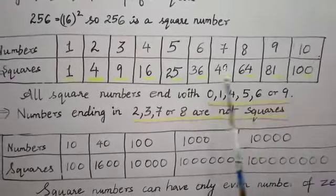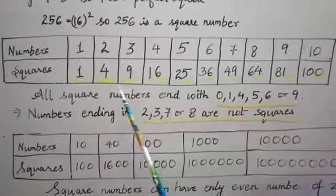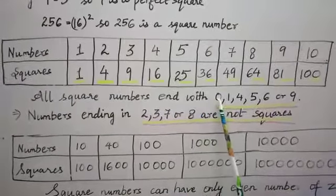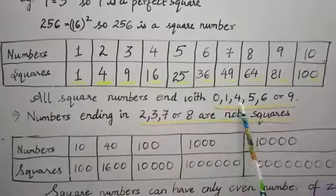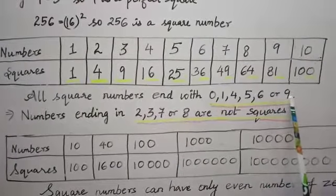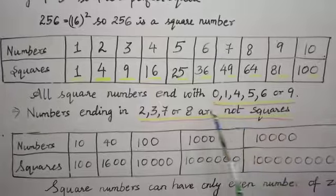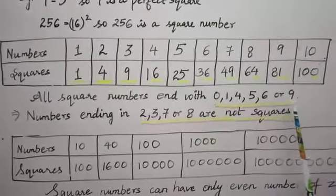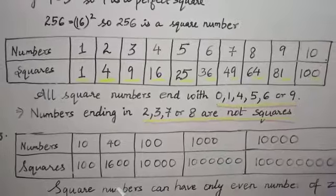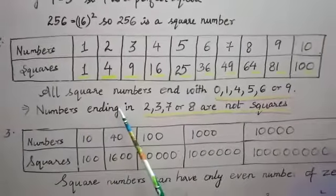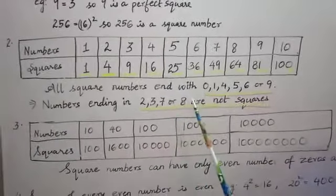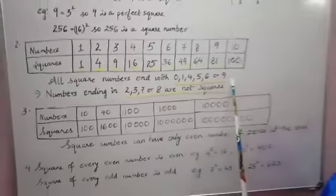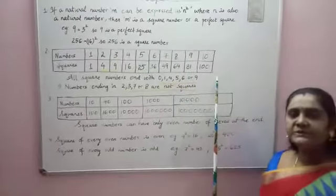So, you can see that all the square numbers are either ending with 0, 1, 4, 5, 6 or 9. That means all the square numbers end with 0, 1, 4, 5, 6 or 9. This also tells us that numbers ending in 2, 3, 7 or 8 are not perfect squares.